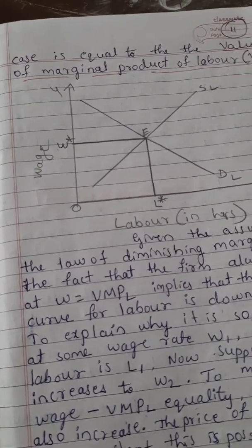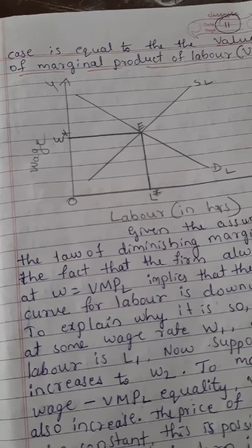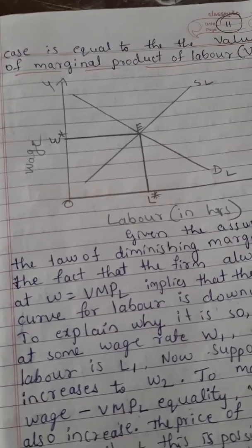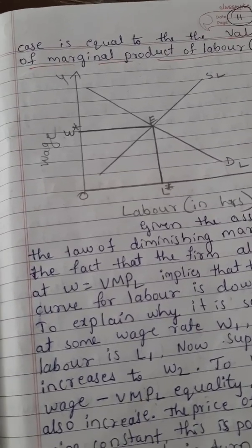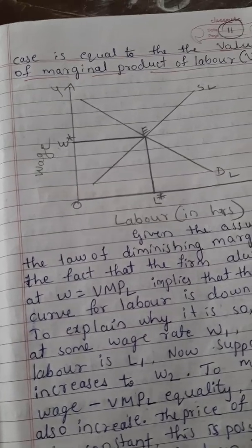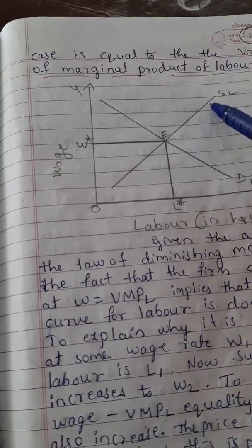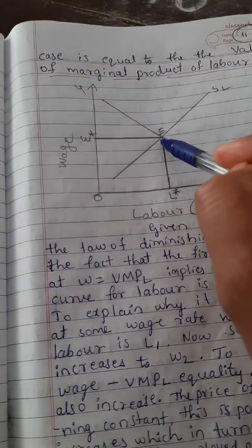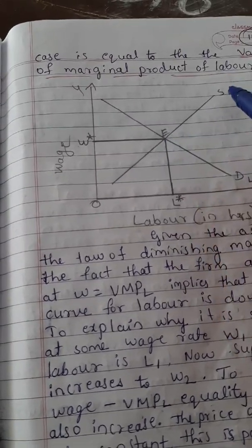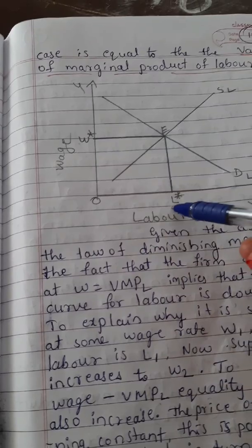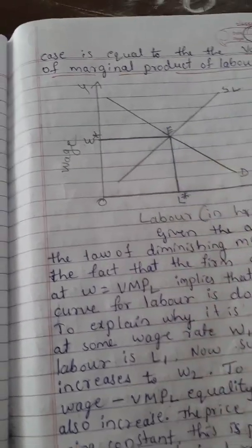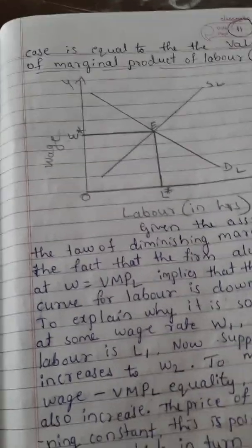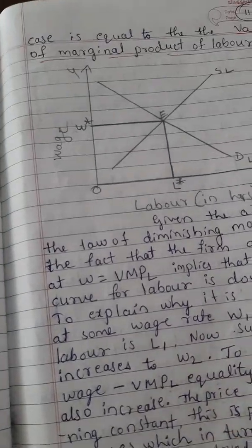The equilibrium wage rate is determined at the point where the two curves intersect — that is, where the labor that households wish to supply equals the labor that firms wish to hire. This is shown in the diagram with an upward-sloping supply curve and downward-sloping demand curve. The intersection point fixes the wage rate, satisfying both firms and labor.